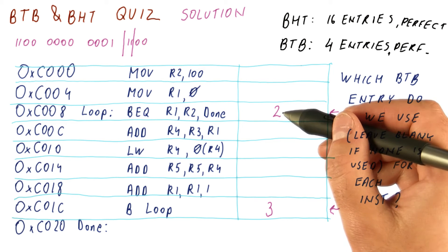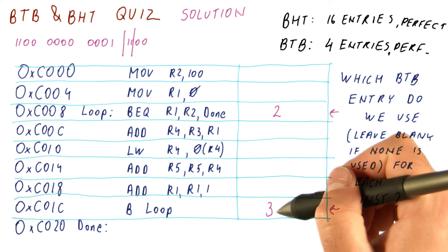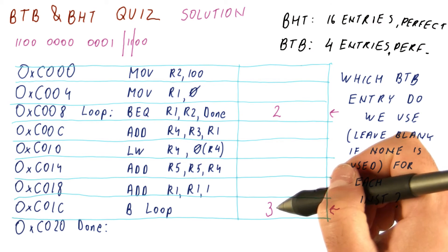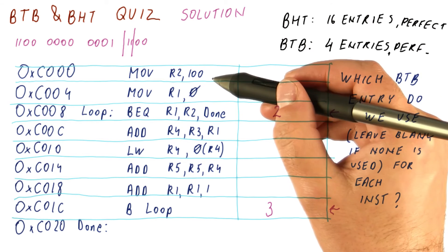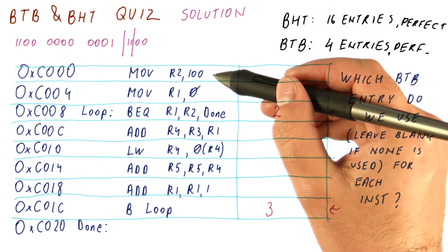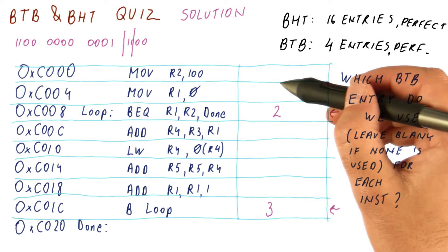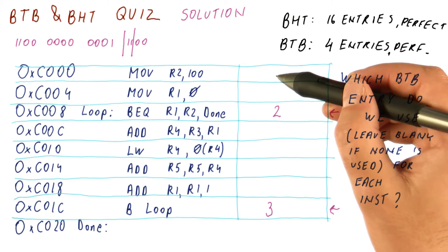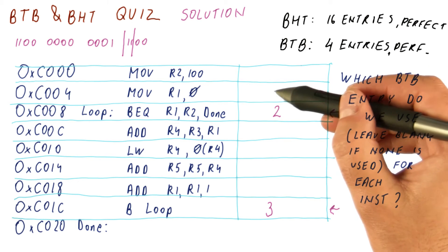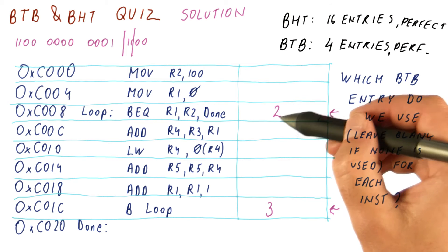As you can see, only entries number two and three are used in this loop. If this instruction were a taken branch, it would have used entry number zero.